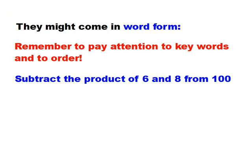One way you might see an expression is in word form, and when that happens you want to pay attention to the key words, and sometimes it really does matter what order you do things in. So let's take a look at this one: subtract the product of 6 and 8 from 100. Where are our key words? Well, I see the word 'product' right there, so that tells me I need to multiply. And then I see the word 'subtract.'